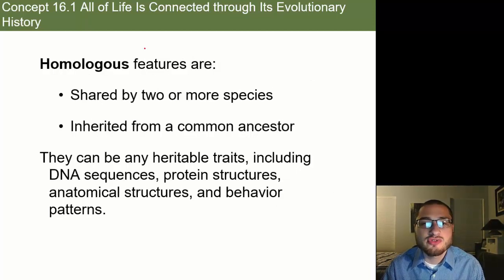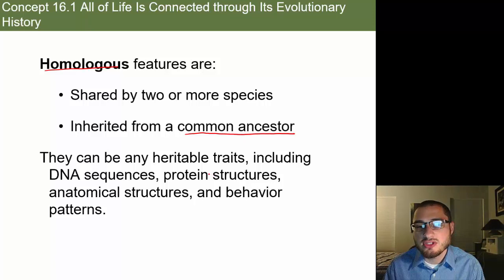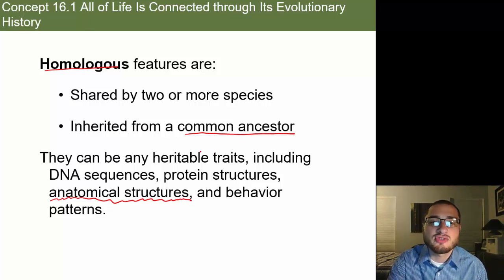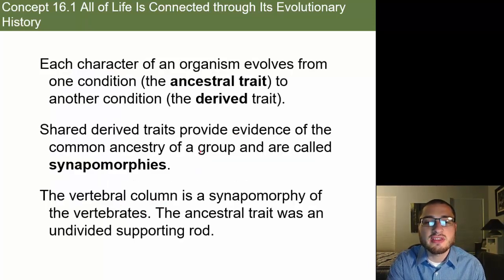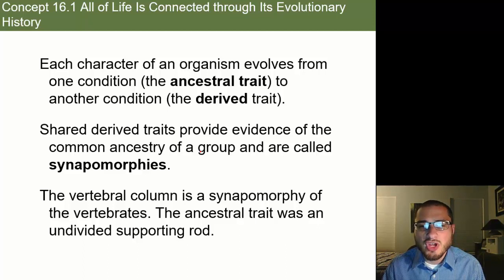We have homologous features — sometimes called homologous structures — which are shared by two or more species because they have a common ancestor somewhere along the way. They can be any heritable traits, including DNA sequences, protein structures, anatomical structures, and behavior patterns. Each character of an organism evolves from one condition — the ancestral trait — which then forms another condition, the derived trait. Shared derived traits provide evidence of common ancestry of a group, and they are called synapomorphies.